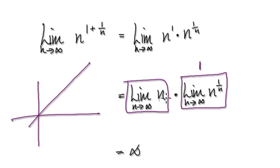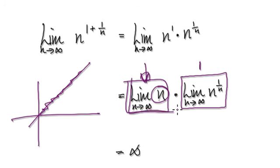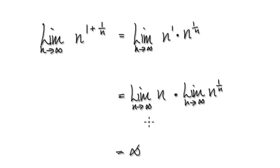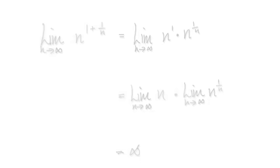Then this other block - well, as n increases, if you look at y equals x it keeps going up, so this one here is going to keep on climbing. You've got something that keeps on climbing times 1, so it's heading towards infinity. So it diverges.